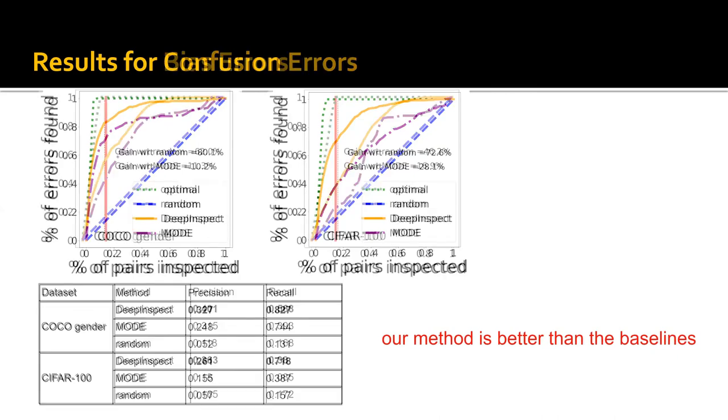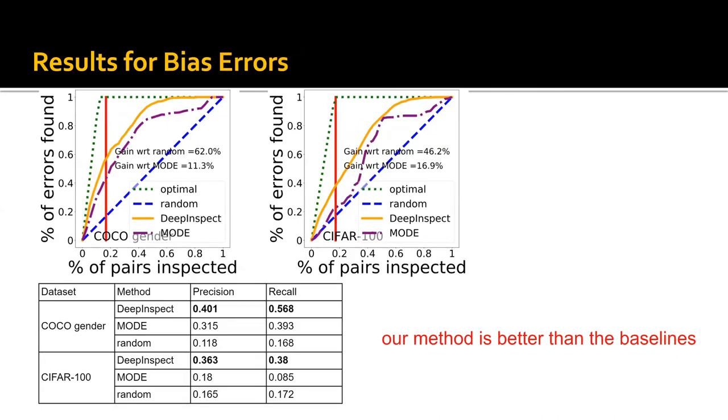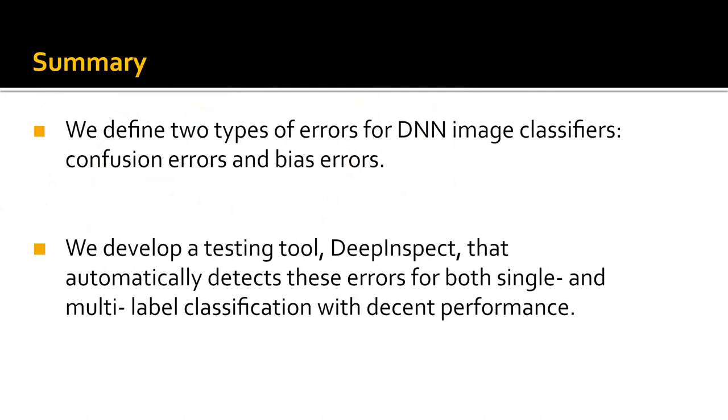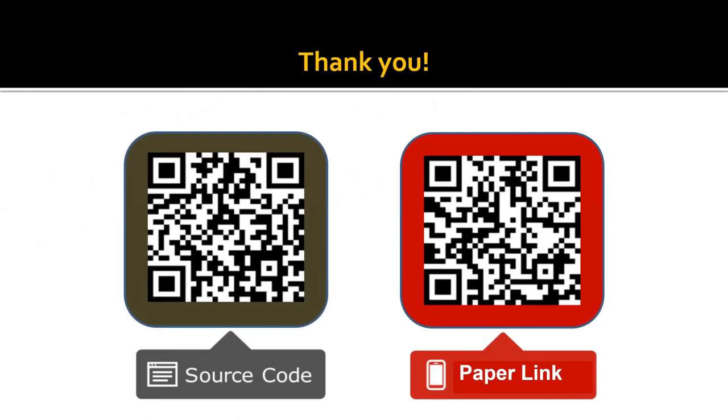For the bias errors, similar trends to the confusion errors. So in summary, we define two types of errors for DNN image classifiers: confusion errors and bias errors. We also develop a testing tool, DeepInspect, that automatically detects these errors for both single and multi-label classifications with decent performance. You can find more details in our paper and release code. Thank you for your attention.